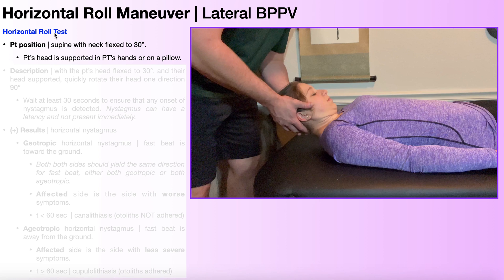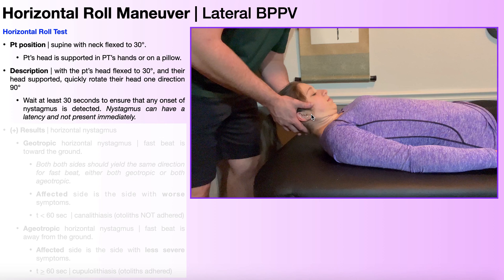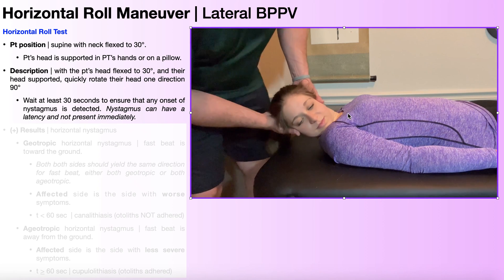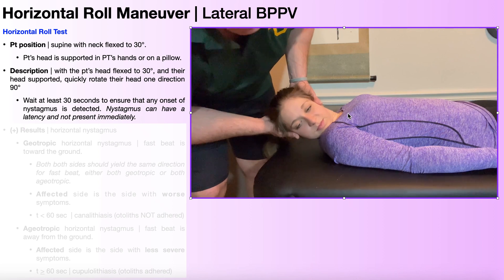To perform the horizontal roll test, the initial patient position is supine, as you see right here, with the patient's neck flexed to about 30 degrees of cervical flexion. You can rest their head on a pillow, but you'll still need to hold their head with your hands — I prefer to support their head with my hands directly. From here, I'm going to rotate her head to the right about 90 degrees while maintaining that 30 degrees of cervical flexion, and observe the eyes for nystagmus.